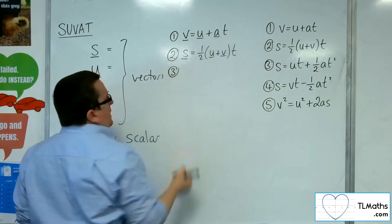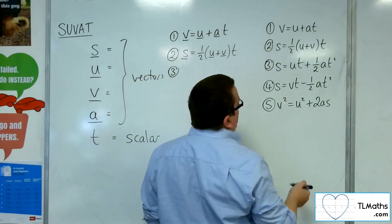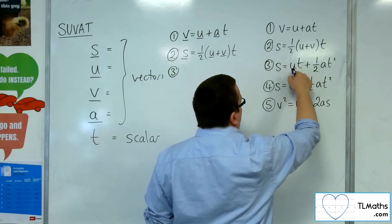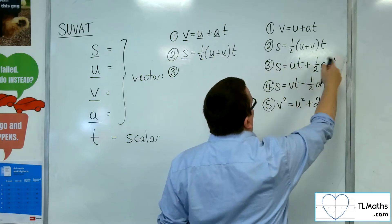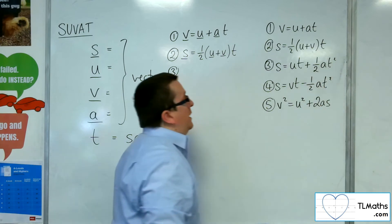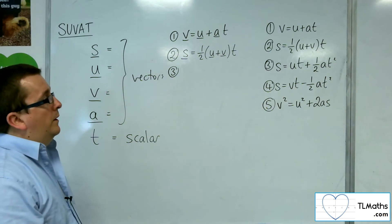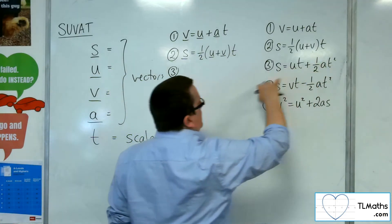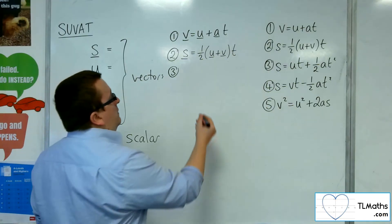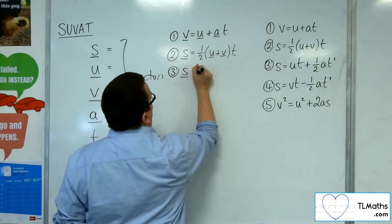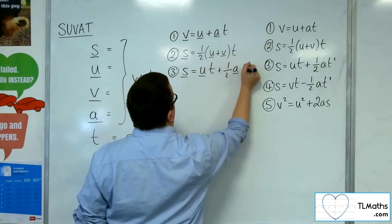Then number three, we've got S equals UT plus a half AT squared. So a vector equals some vector times a scalar, plus a half of a vector times a scalar squared. That's fine. You can square a scalar, just a number. So S is the sum of two vectors there. S equals UT plus one half AT squared.